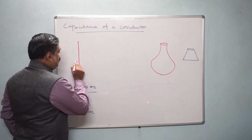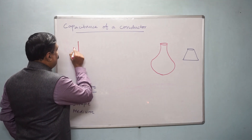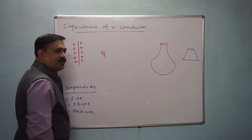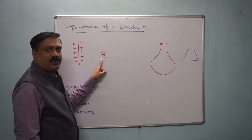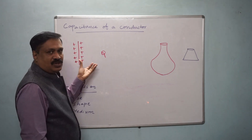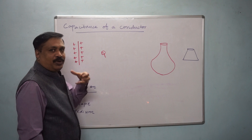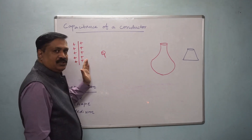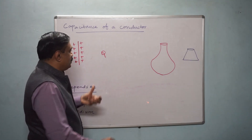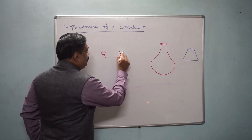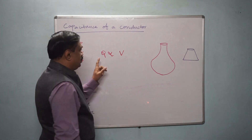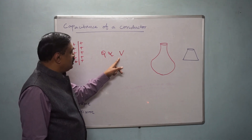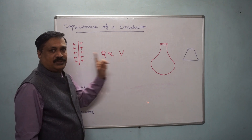I am going to give a charge Q to this conductor. Due to this charge, the potential of the conductor has increased. Therefore, the potential depends on charge. Potential is proportional to charge.